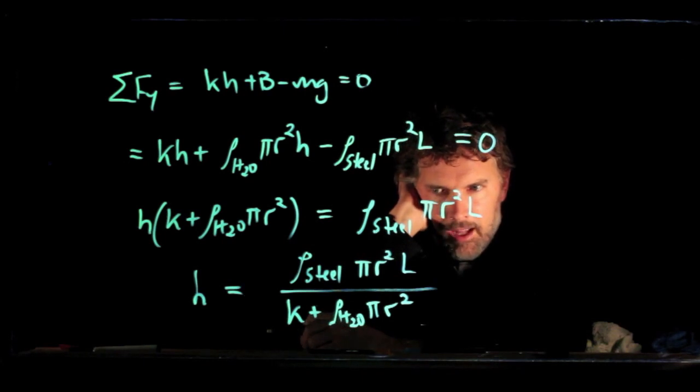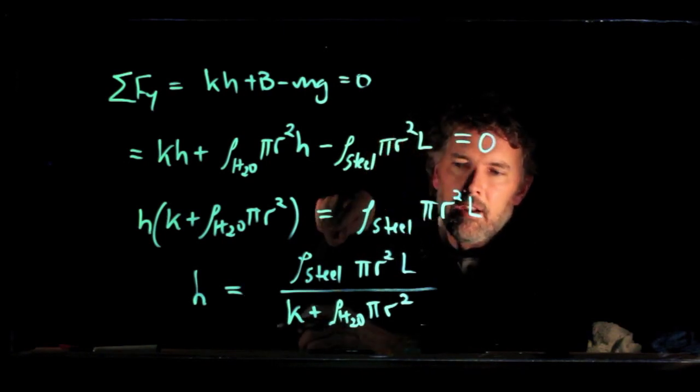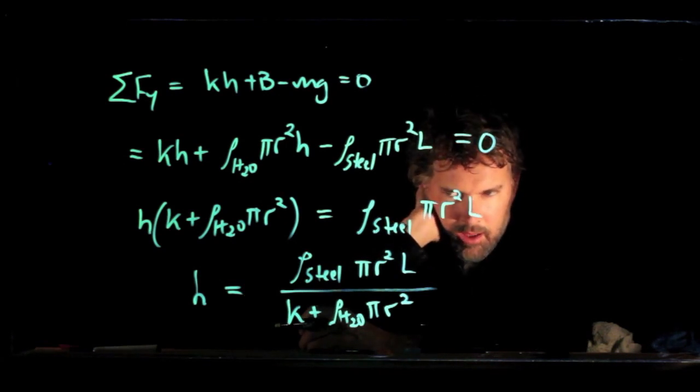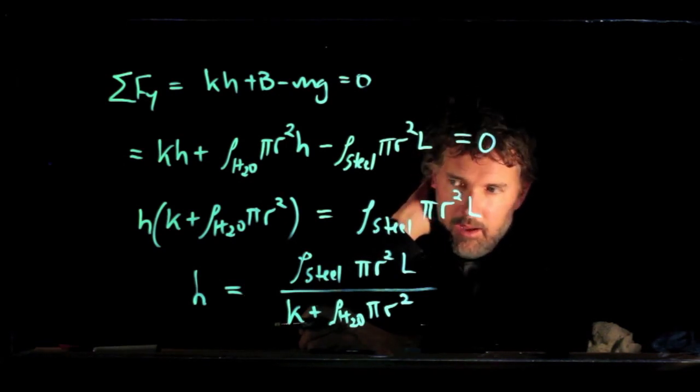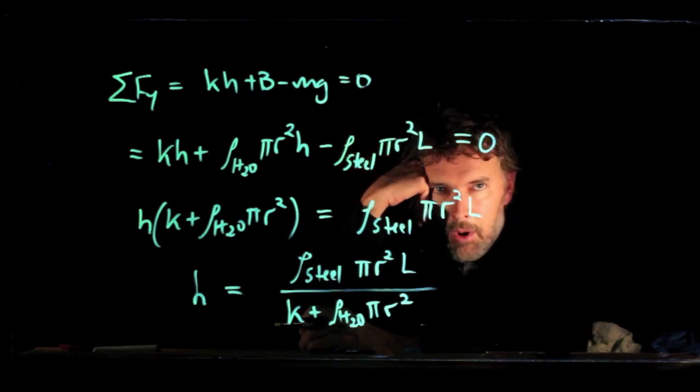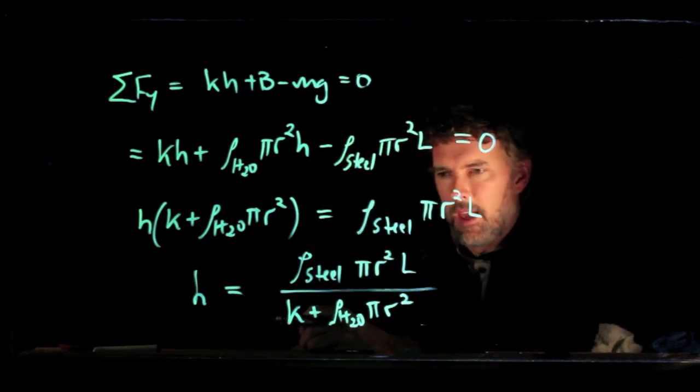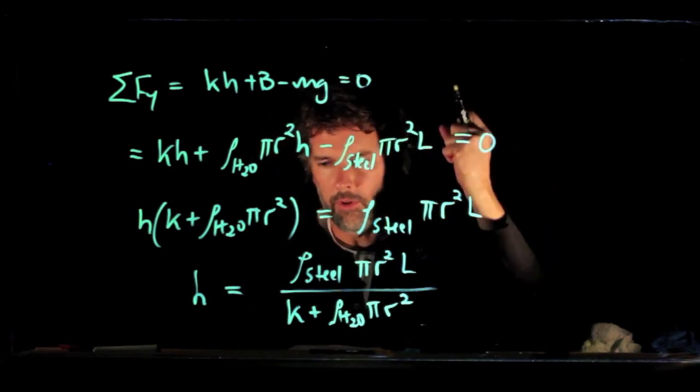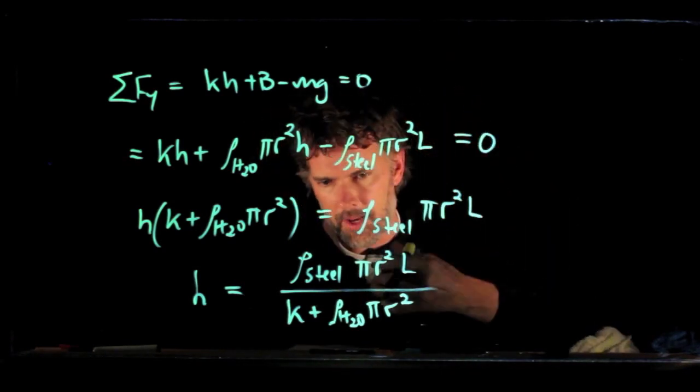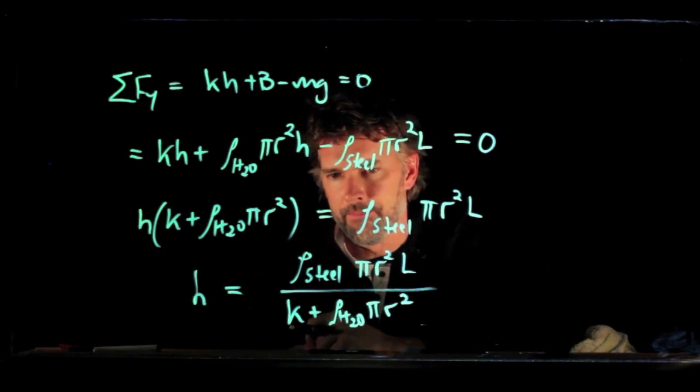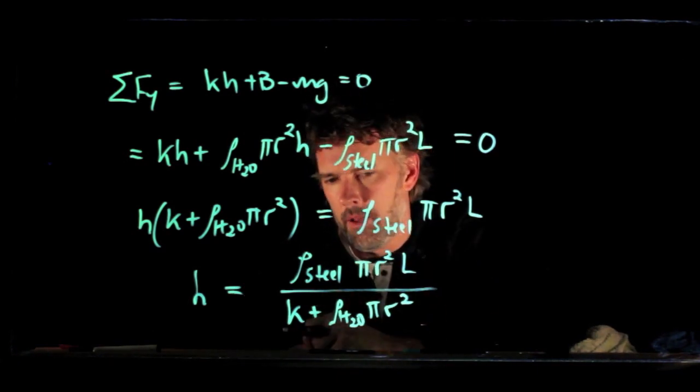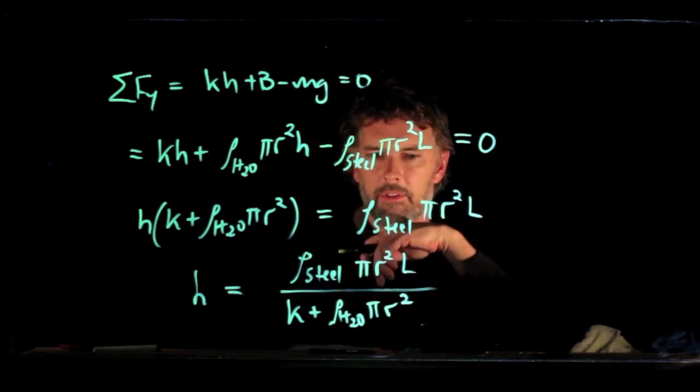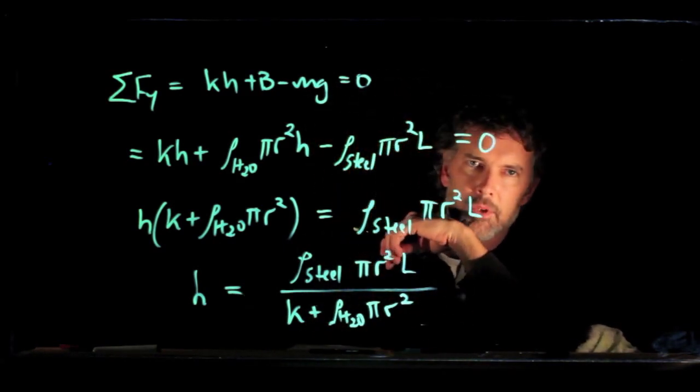It also says that if the spring k gets stronger, then since it's on the denominator, h gets smaller. It doesn't sink as far. And that makes sense too, right? If the spring is stronger that's holding it up, it's not going to fall down as far into the water. So I think we have basically the right solution here. And if you have all these numbers, you can plug them in and give them a shot.